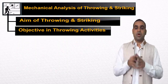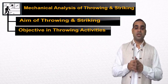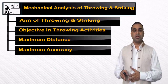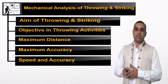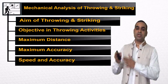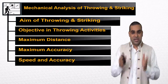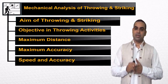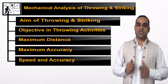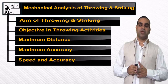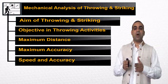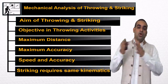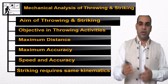There are some objectives of throwing activities: to cover maximum distance, maximum accuracy, and speed and accuracy — adhik doori, adhik satikta aur gati aur satikta. This is the objective of throwing and striking. Striking also requires the same kinematics when the object loses contact with the instrument.